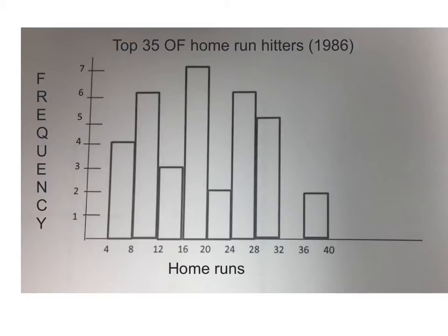The reason we like this is just like a bar graph, the person can tell a lot of information about this. They can focus, instead of having to look at the table and look at the numbers, they can obviously tell that this class between 16 and 20, there were seven guys that hit in between 16 and 20 home runs.